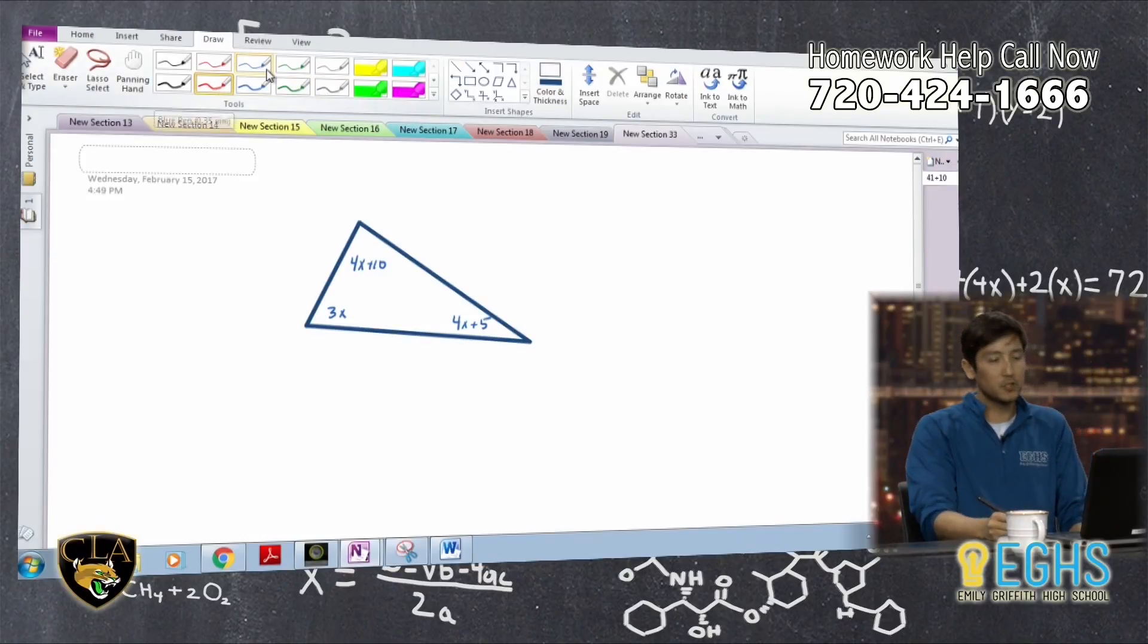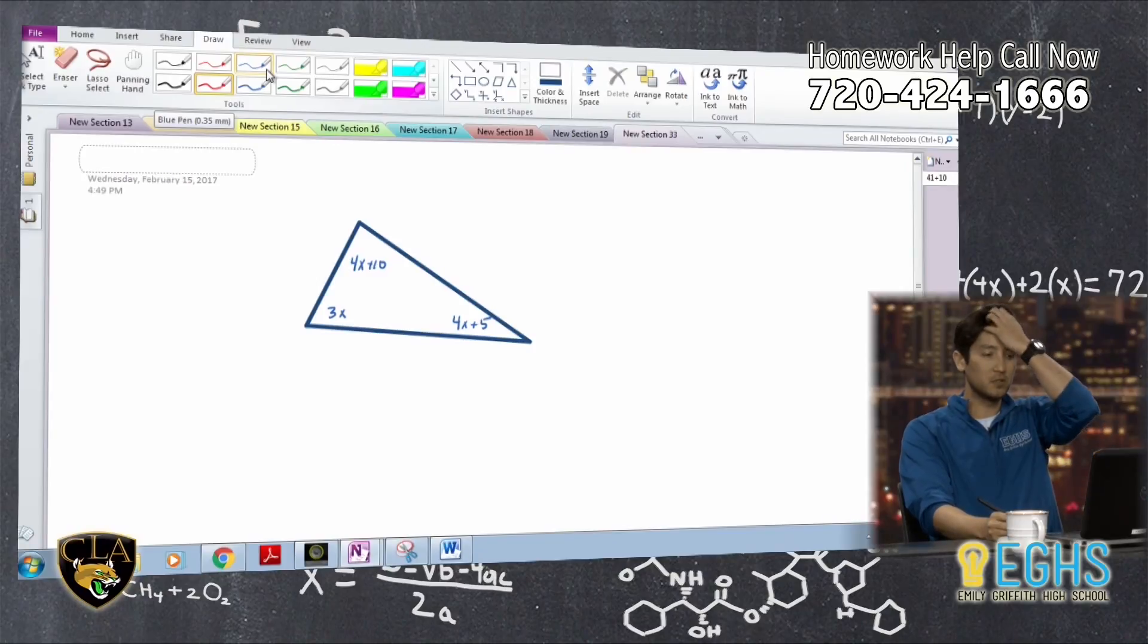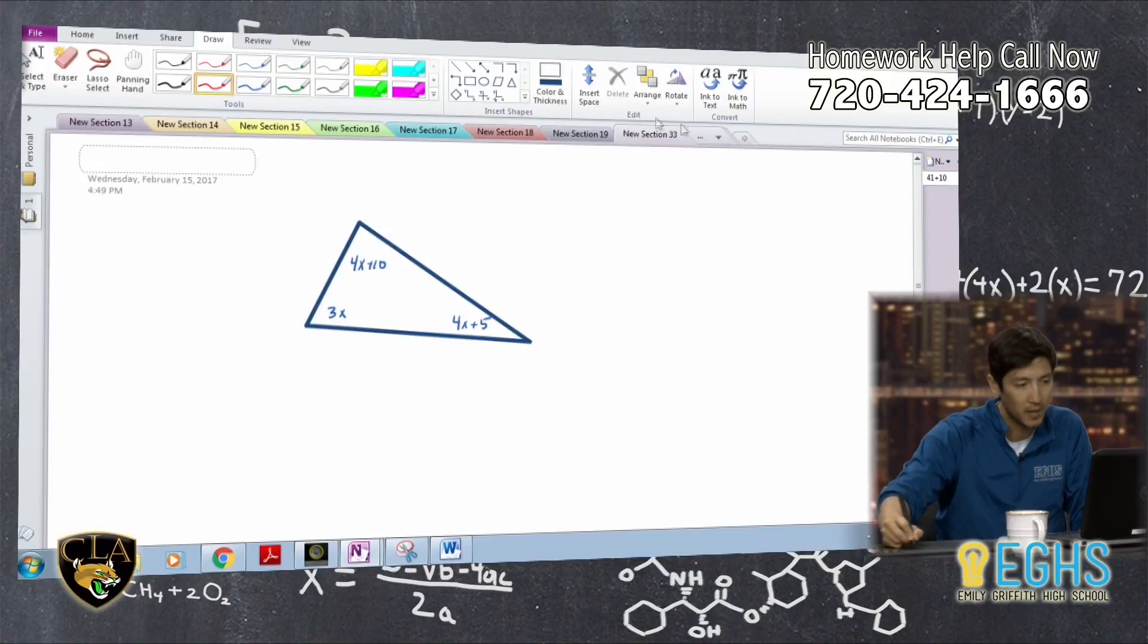So what we're looking at here is what we're really trying to do is trying to relate the interior angles of the triangle to things that we know about angles of a triangle, which is that they all add up to 180 degrees.